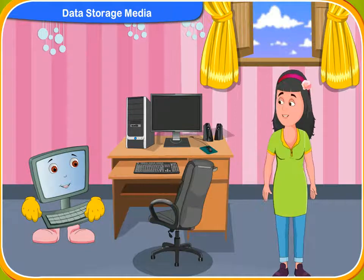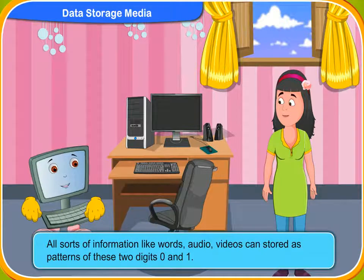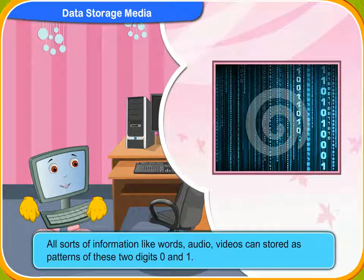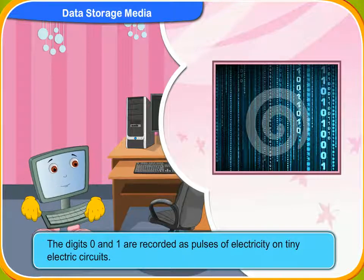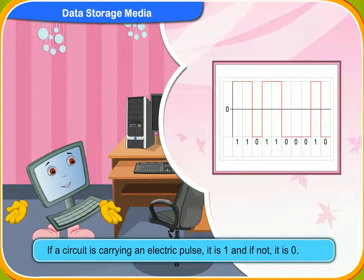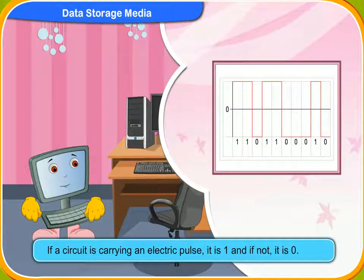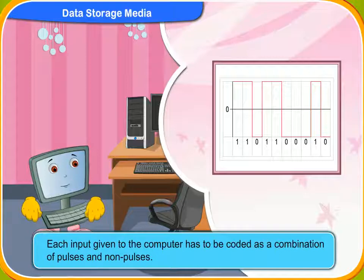What do these two binary digits or bits do? All sorts of information like words, audio, and video can be stored as patterns of these two digits, 0 and 1. The digits 0 and 1 are recorded as pulses of electricity on tiny electric circuits. If a circuit is carrying an electric pulse, it is 1, and if not, it is 0. Each input given to the computer has to be coded as a combination of pulses and non-pulses.